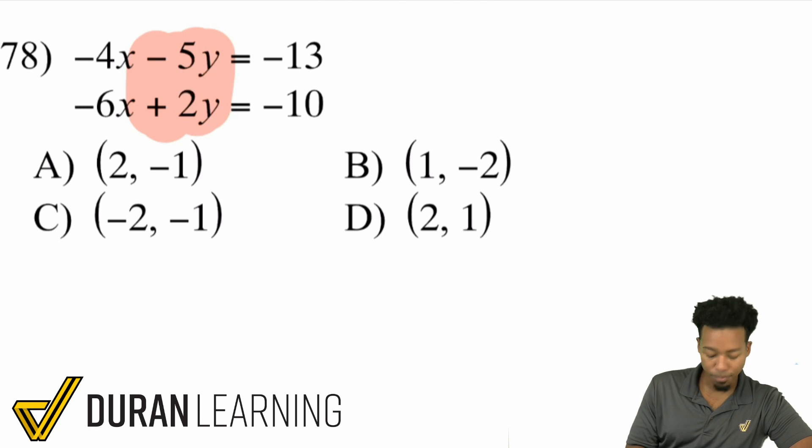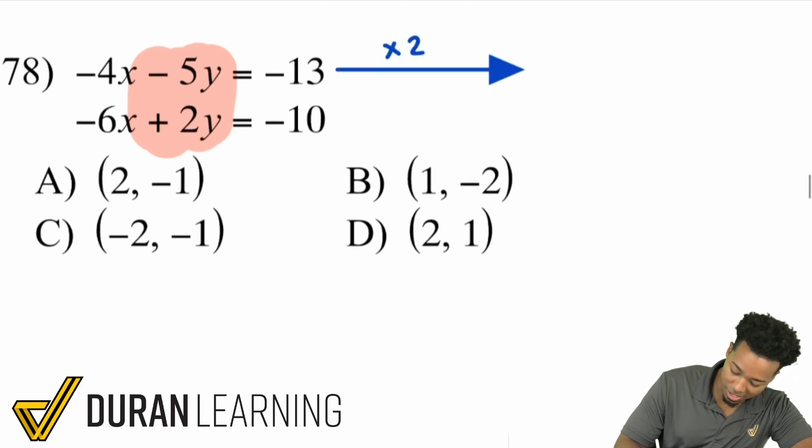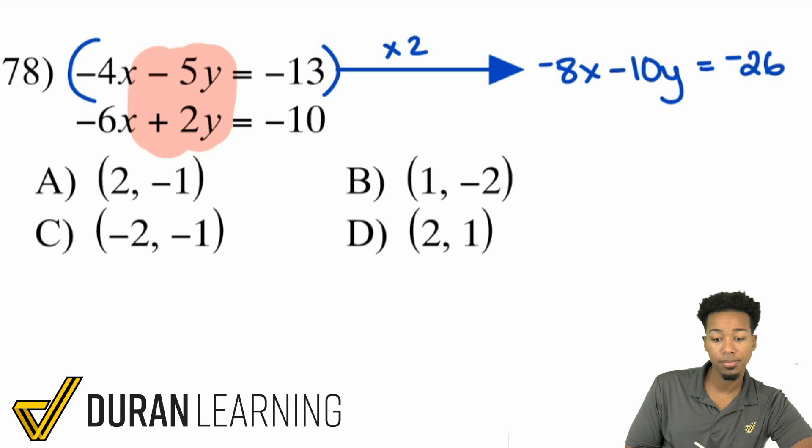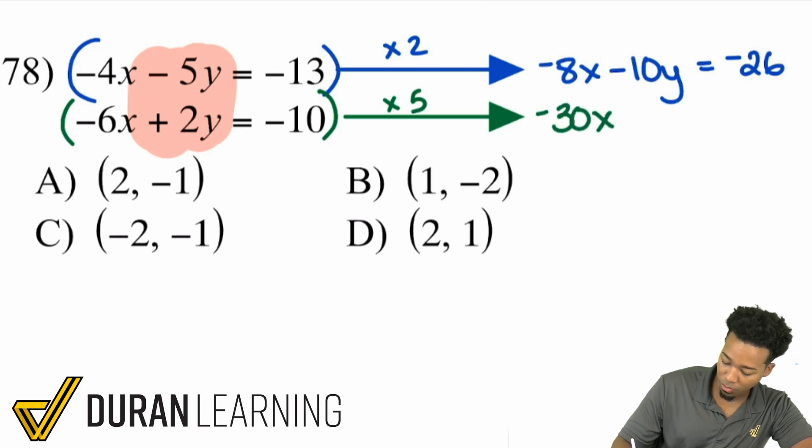So, I'm going to go ahead and do that here. Let's go ahead and get this arrow going. And I'll multiply this top one by 2. So, negative 4x times 2 is negative 8x. Negative 5y times 2 is negative 10y. Negative 13 times 2 is negative 26. Next up, the bottom equation, I'm going to go ahead and multiply this one by positive 5. Negative 6x times 5 is negative 30x. Positive 2y times 5 is positive 10y. And negative 10 times 5 is negative 50.